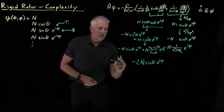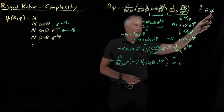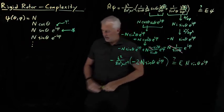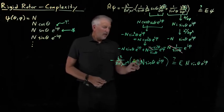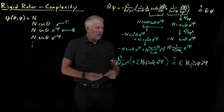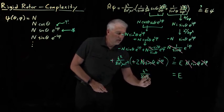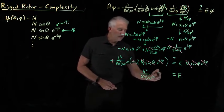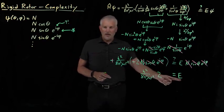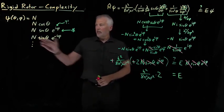After canceling those pieces, what remains is minus n sine theta times e to the i phi, and minus n sine squared over sine gives another n sine theta times e to the i phi. Altogether, the entire term in parentheses simplifies to minus 2n sine theta e to the i phi. Multiplying by the constants minus h squared over 8 pi squared mu r squared, the n's cancel, sine theta cancels, and e to the i phi cancels. The two negative signs cancel, and we're left with h squared over 8 pi squared mu r squared times 2, confirming this function solves Schrödinger's equation with energy 2h squared over 8 pi squared mu r squared.